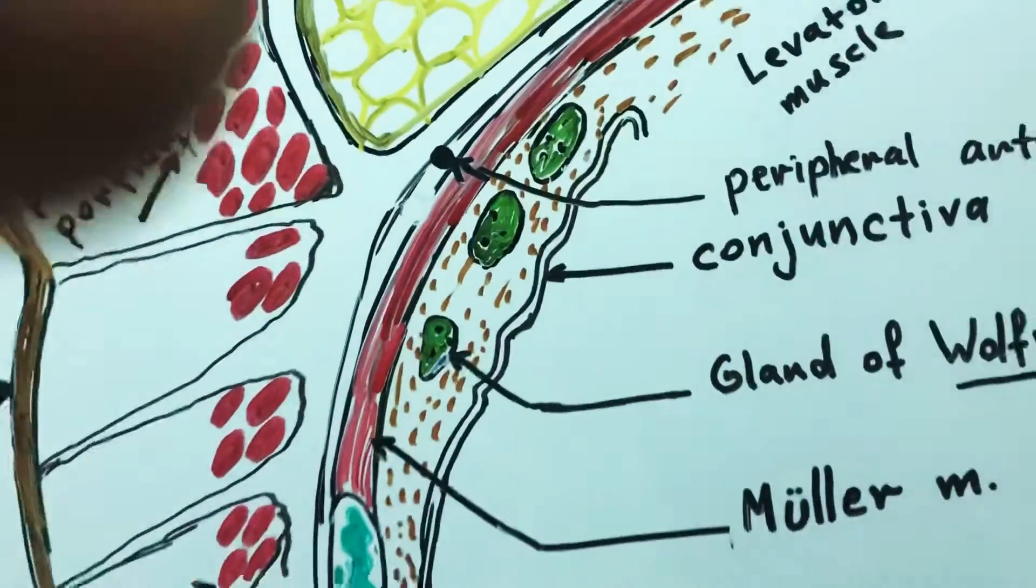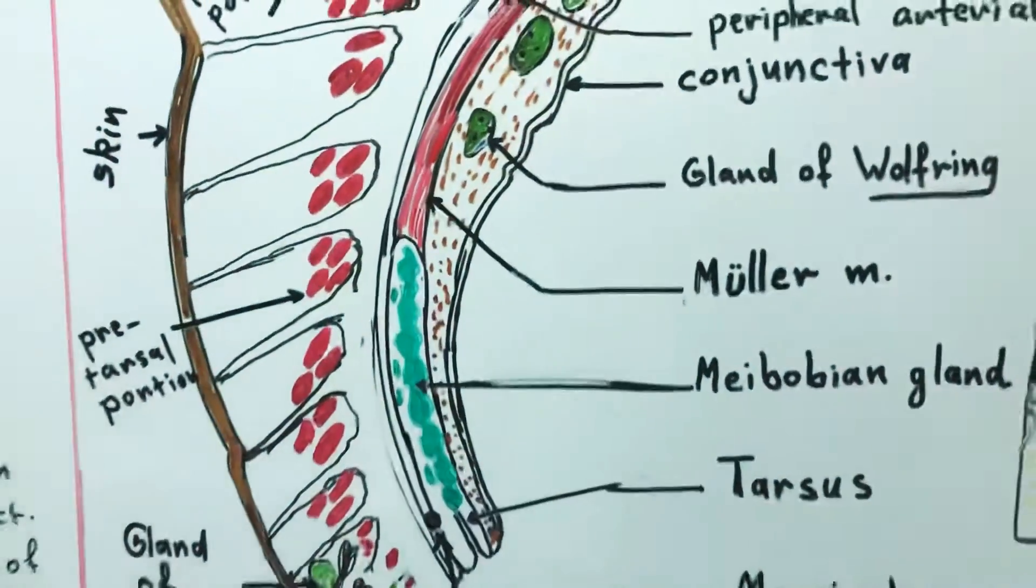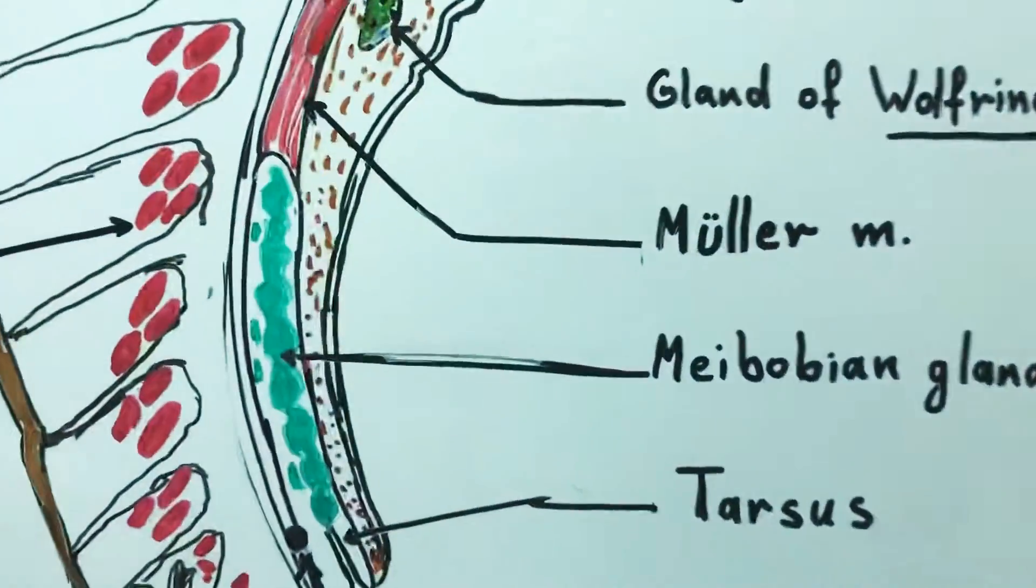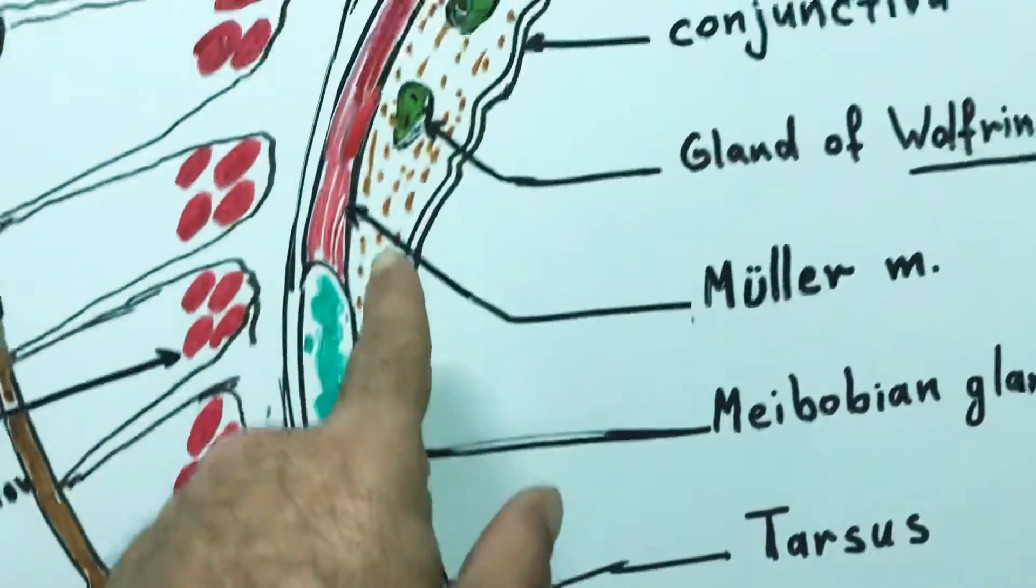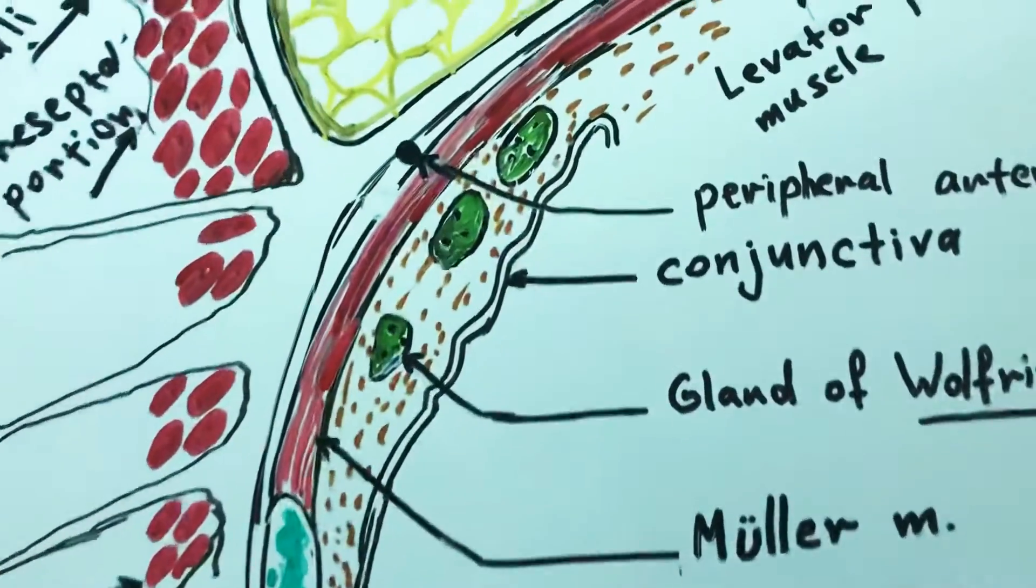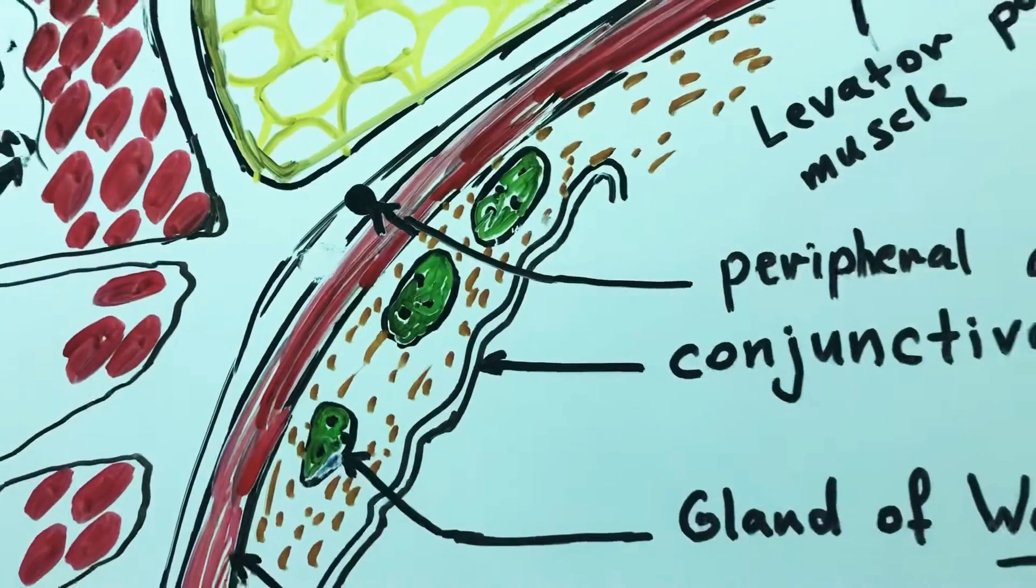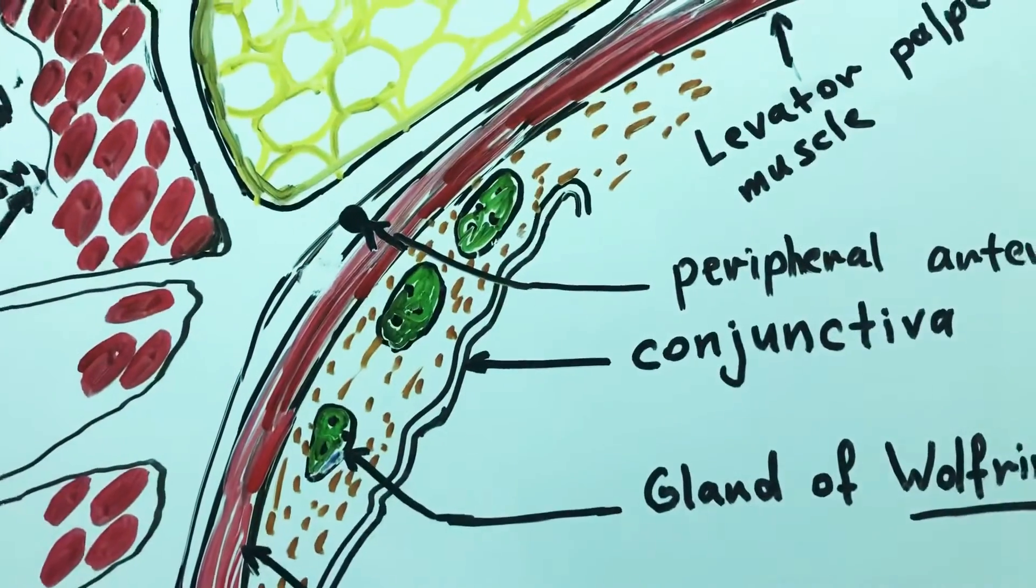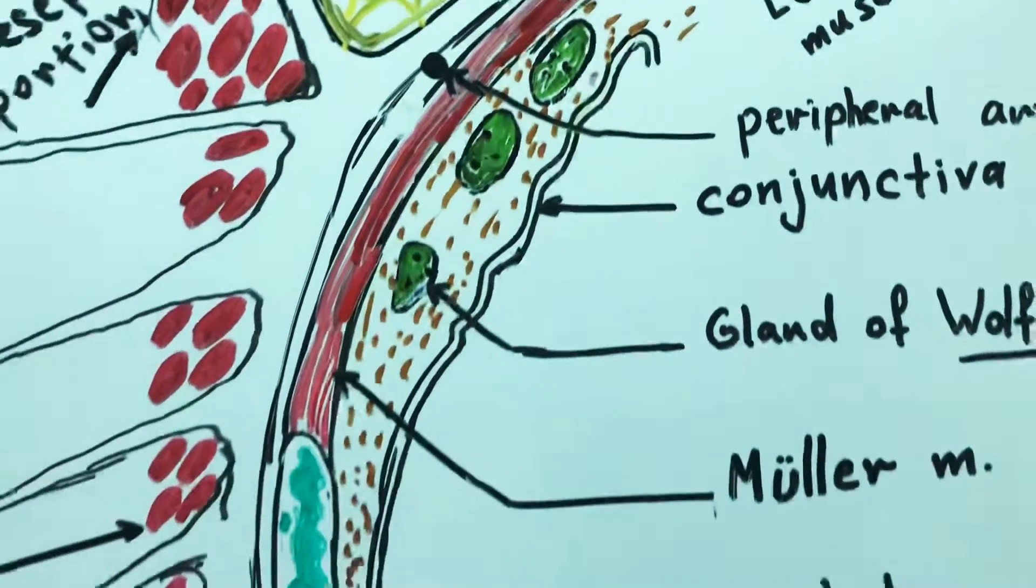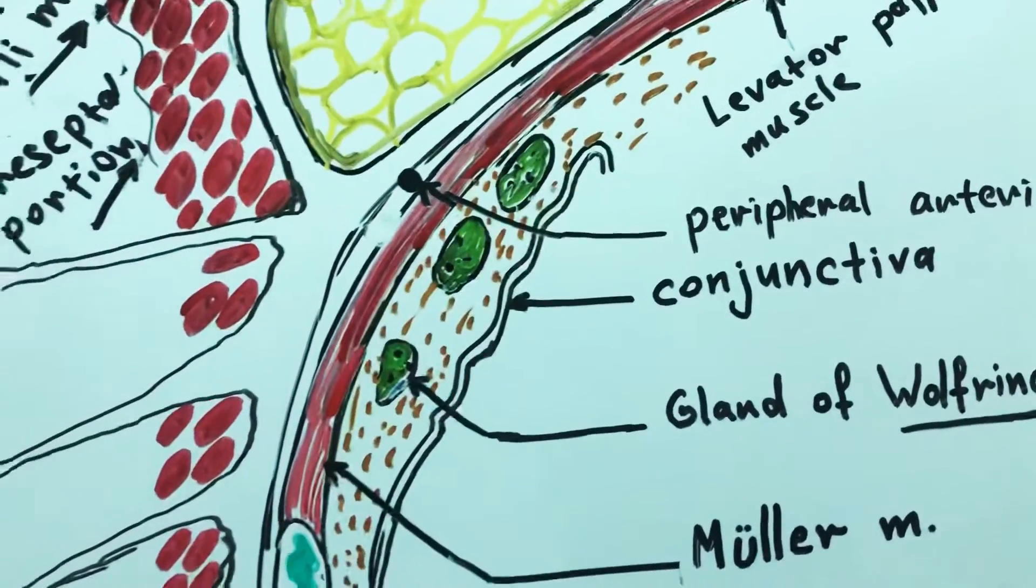And lastly the palpebral conjunctiva which is the part of the ocular conjunctiva. The palpebral conjunctiva is composed of non-keratinized stratified columnar epithelium that has goblet cells. Goblet cells actually secrete mucus which form the mucus layer of the tear film.